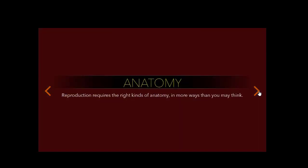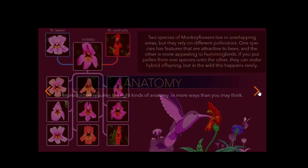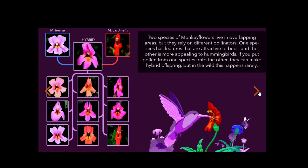Reproduction requires the right kinds of anatomy, in more ways than you may think. Two species of monkey flowers live in overlapping areas, but they rely on different pollinators. One species has features that are attractive to bees, and the other is more appealing to hummingbirds.